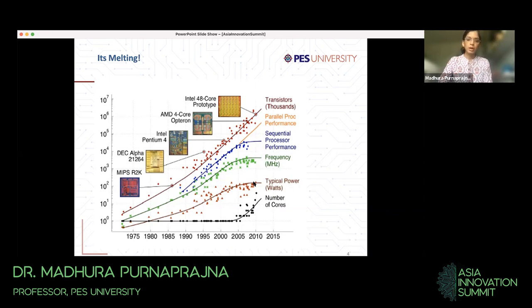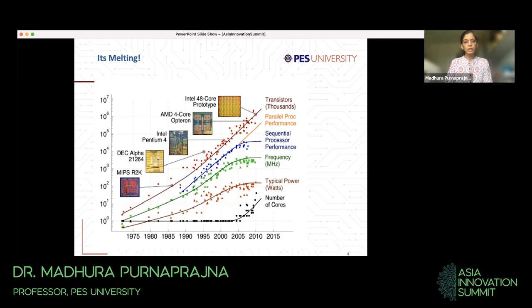Performance did not grow along the orange line of parallel processing performance. Frequency had to stall due to physical limits, power consumption hit a ceiling, and while core counts grew, parallel processing performance did not follow. Earlier, if you wanted to run an application faster, you'd simply wait a couple of years for a new chip from Intel, AMD, or NVIDIA — and things would speed up automatically. That is no longer happening.